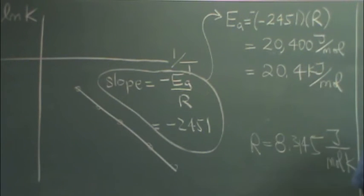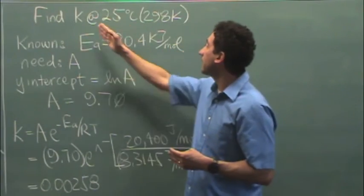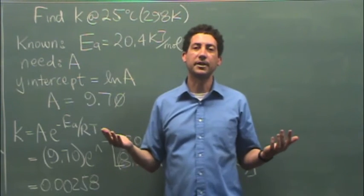So I end up getting 20,400 joules per mole or 20.4 kilojoules per mole. And thus found my activation energy from doing a plot. In the last part of this lab, I want to find k, the rate constant, in this case at 25 degrees C or 298 K.